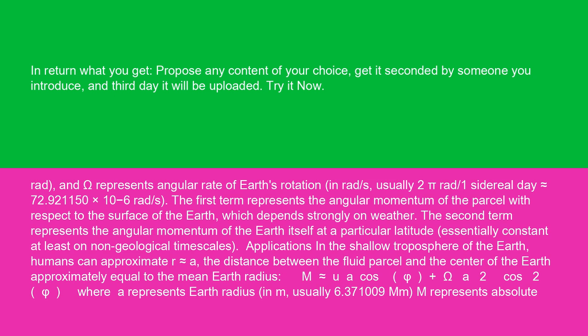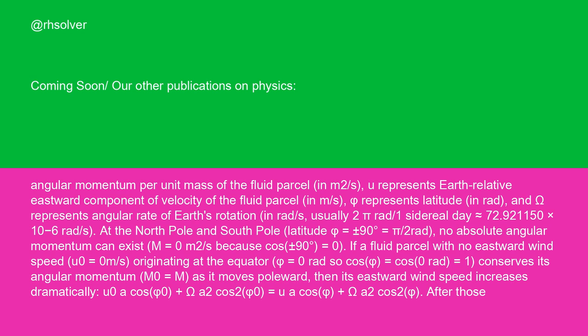Applications in the shallow troposphere of the earth: we can approximate r ≈ a, the distance between the fluid parcel and the center of the earth approximately equal to the mean earth radius. So M ≈ Ua·cos(φ) + ωa²·cos²(φ), where a represents earth radius in m, usually 6.371009 × 10⁶ m; M represents absolute angular momentum per unit mass in m²/s; U represents earth-relative eastward component of velocity in m/s; φ represents latitude in radians; and ω represents angular rate of earth's rotation in rad/s, usually 2π rad / 1 sidereal day ≈ 72.921150 × 10⁻⁶ rad/s.